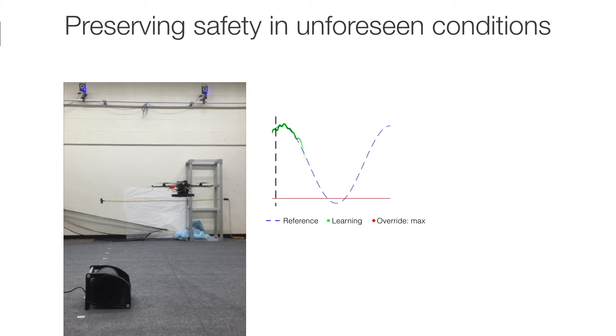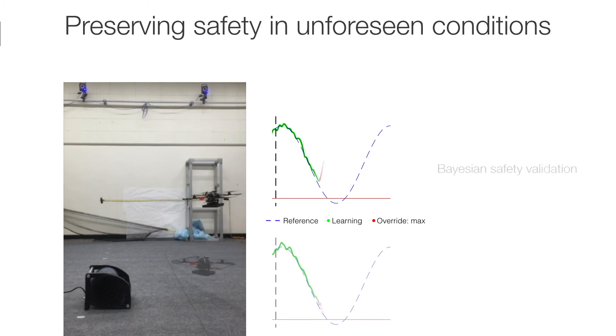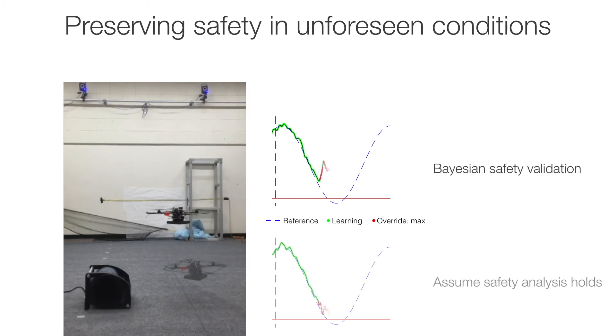We can see the difference in behavior with and without safety validation. While the Bayesian system quickly loses confidence in the validity of computed safety guarantees and refuses to approach the ground, the naive safety algorithm believes it is safe to keep going.